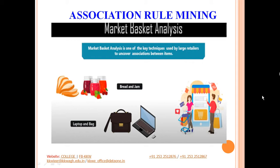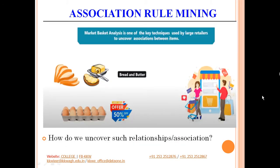How does identifying such relationships help? Let us say we are able to identify that customers who purchase bread and butter also tend to purchase eggs. As the owner of the retail shop, I would place a special offer on eggs so that almost all customers who purchase bread and butter will also purchase eggs. If this happens, I will be able to attract more customers and my revenue increases. The question then arises: how do we uncover such relationships or associations?